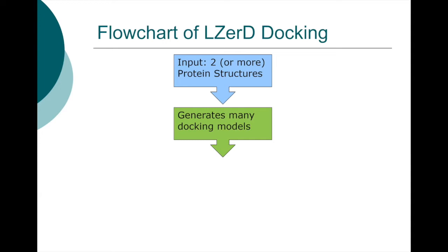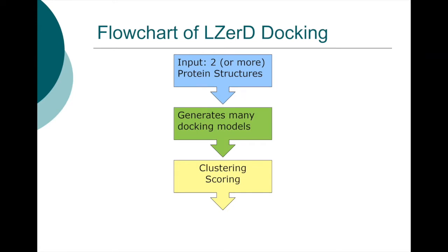The second step is to rank the 100,000 models. Before ranking, the process does clustering to reduce the number of structures. Clustering identifies very similar solutions and picks one representative structure from each cluster. This typically reduces the docking models to a few thousand structures, which are then scored.